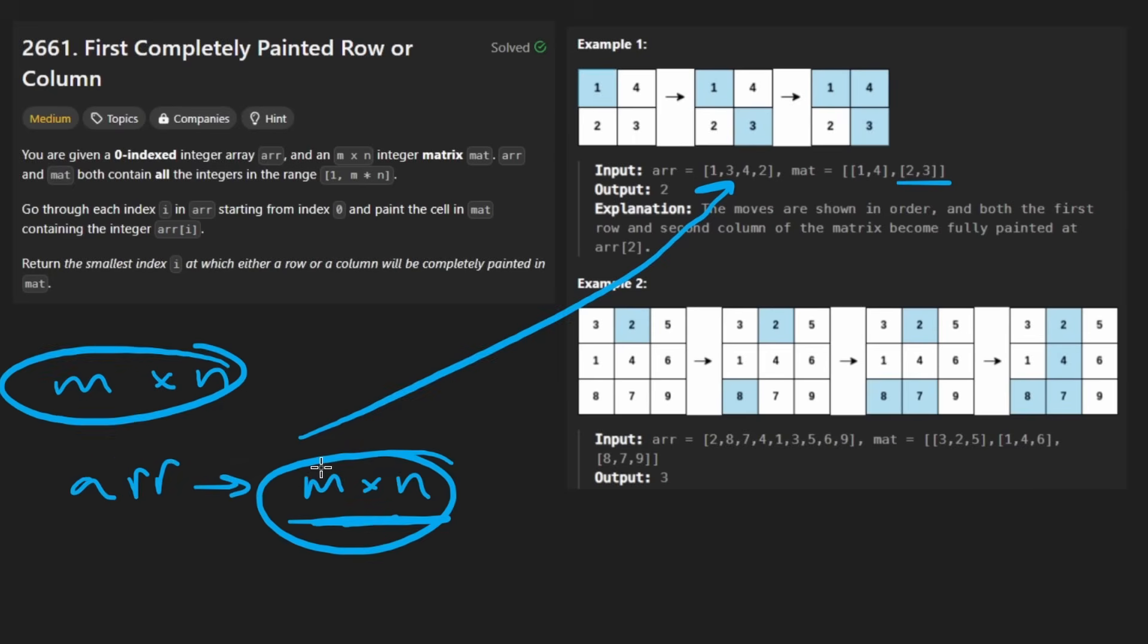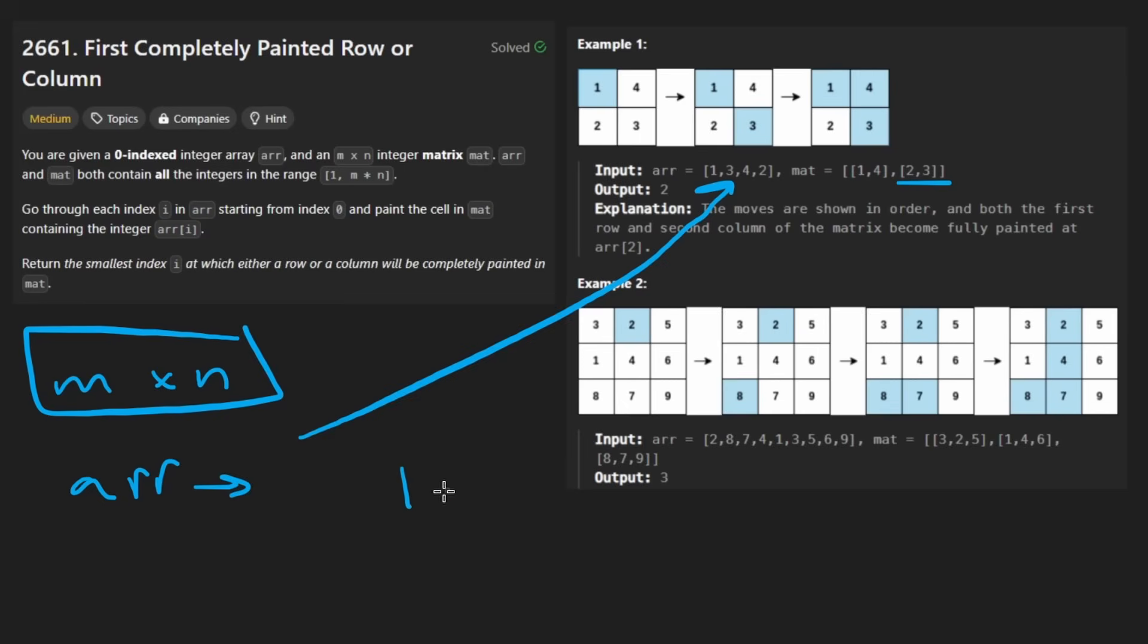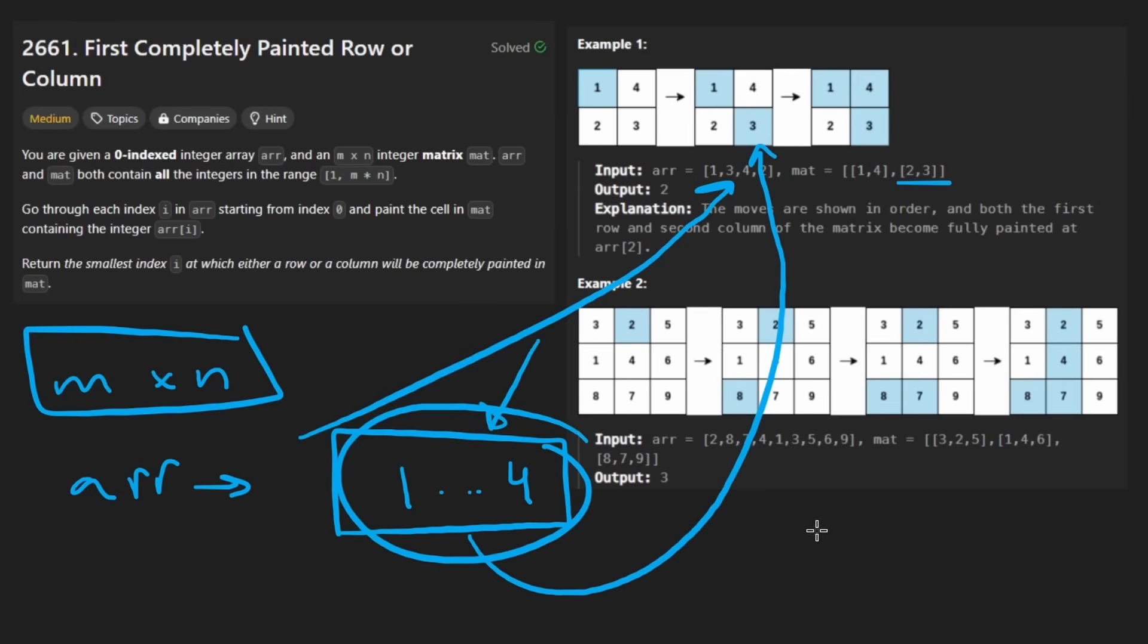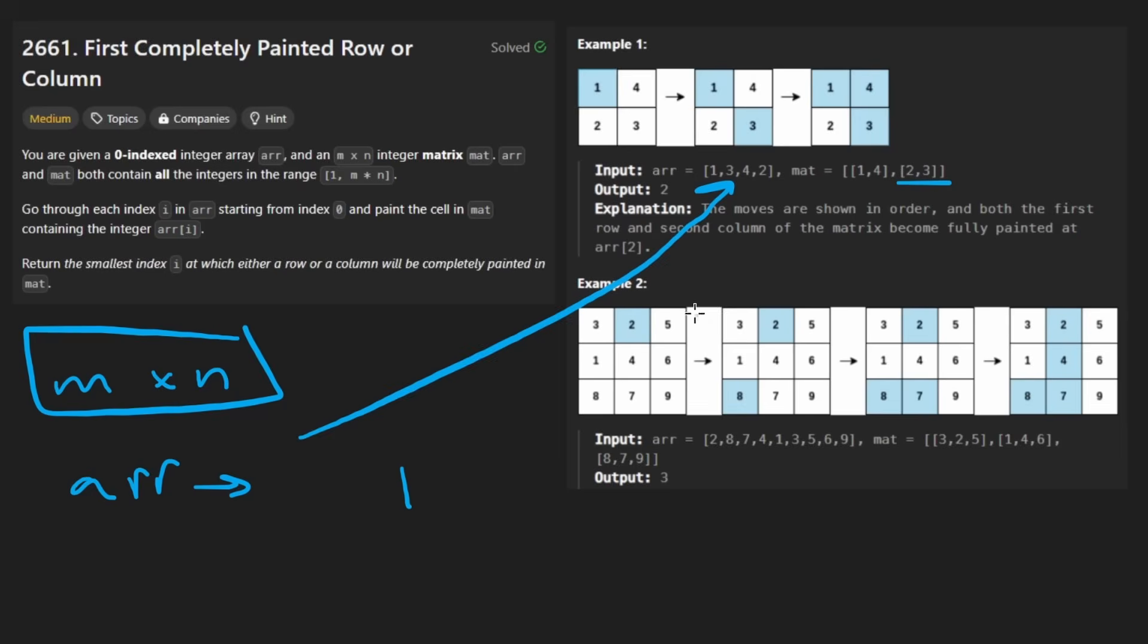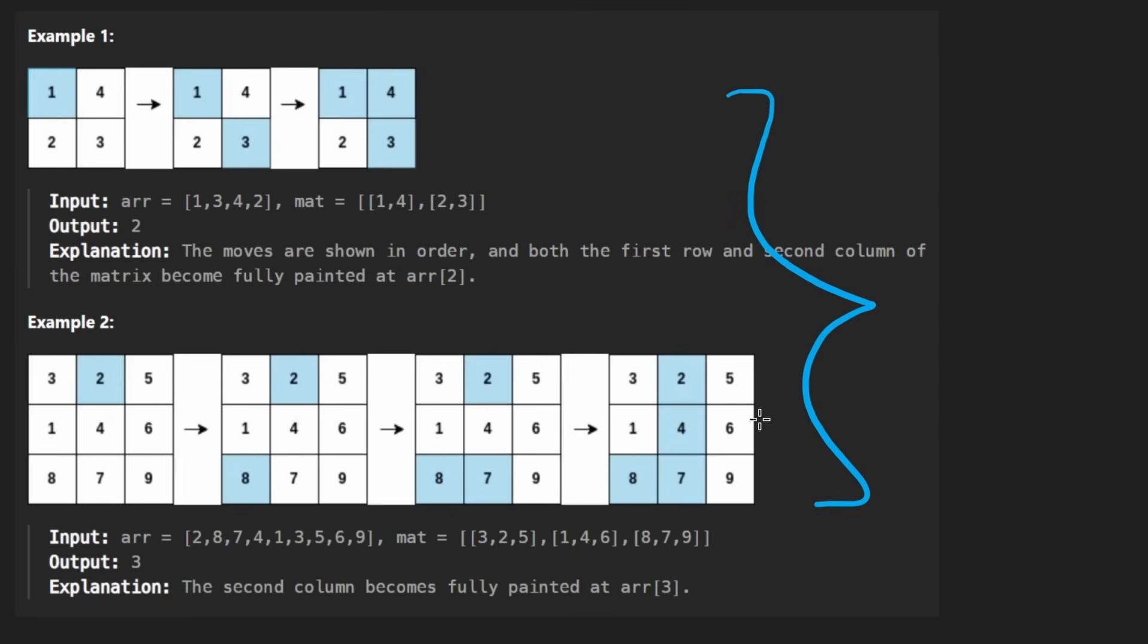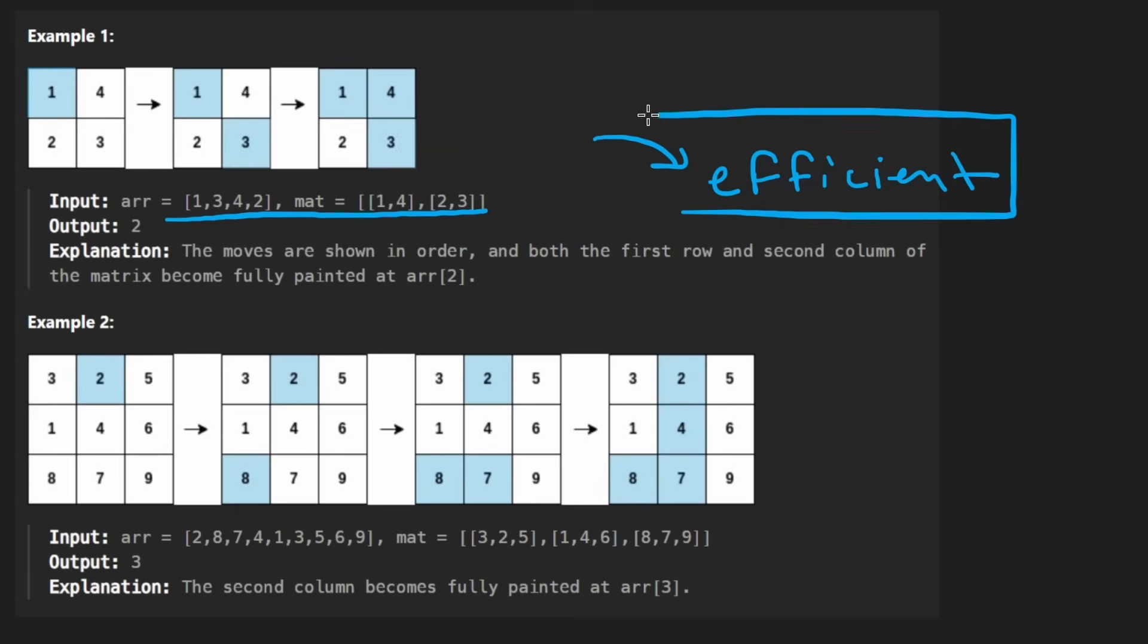So if the matrix is m by n, then we guarantee that the array is going to have exactly m times n elements. So the number of elements is going to be equal, and the elements themselves are going to be equivalent in that the matrix will have numbers in the range from 1 up until m times n. In this case, that's 2 times 2. So it will have all the numbers between 1 and 4 present in the matrix. If all of those numbers are present, we can guarantee that each is present only exactly a single time because that's how many slots we have. I think this is like the pigeonhole principle.